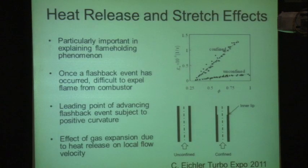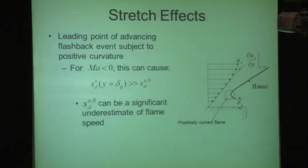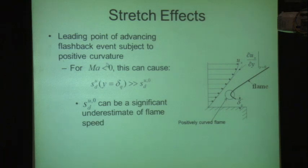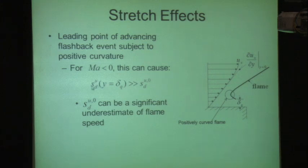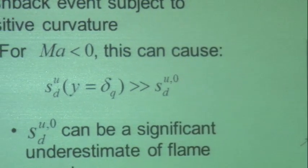One more point on stretch effects: because of the positive curvature of the bulging flame front, if you have a flame with a negative Markstein length, the flame speed is actually higher than the laminar unstretched value. The local flame speed can be much greater than the unstretched flame speed — denoted by the superscript 'not.' So the laminar unstretched flame speed can significantly underestimate local flame speeds.